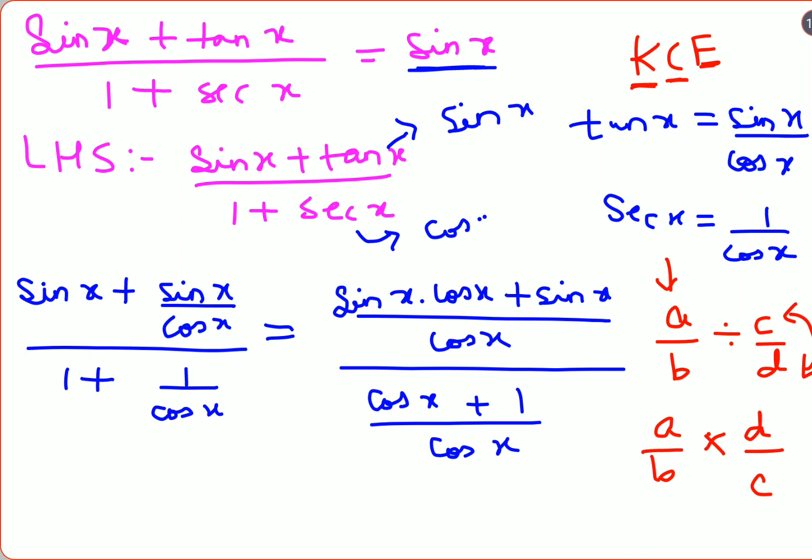So here, if you look, your B was cos x and your D was also cos x. Eventually, B and D, if they are the same, they can cancel. This is what happened over here as well.